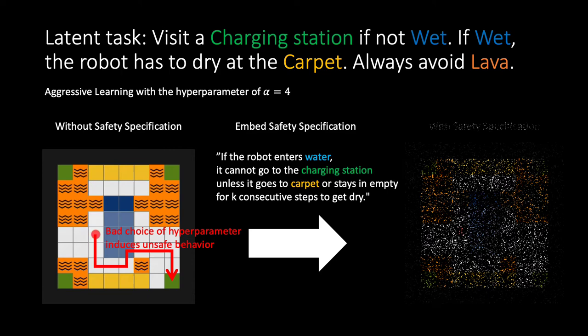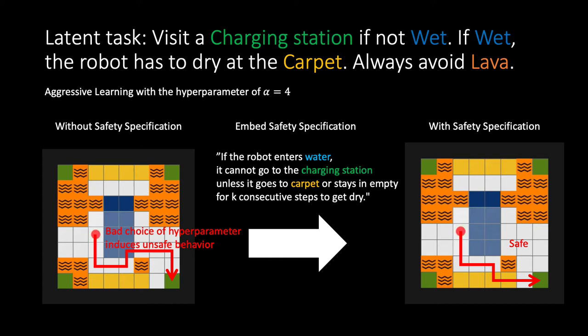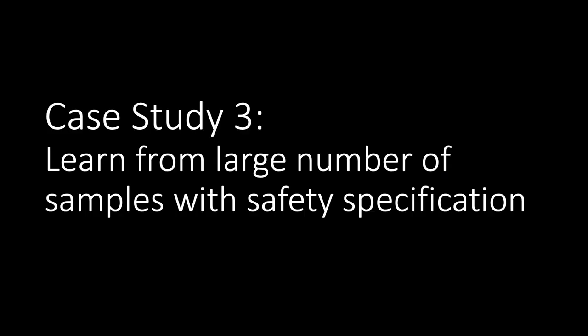But if you embed safety specification, our method always guarantees a safe plan regardless of any hyperparameter values or any number of demonstrations. In conclusion, we propose a new approach to task learning and planning with safety guarantees.